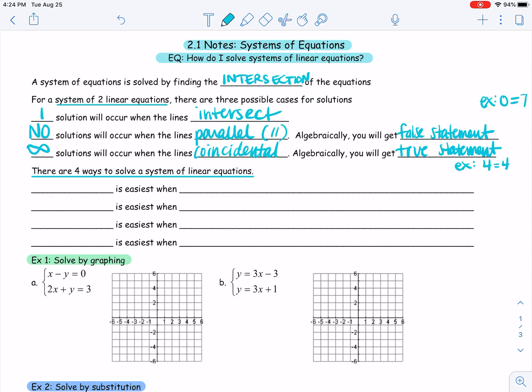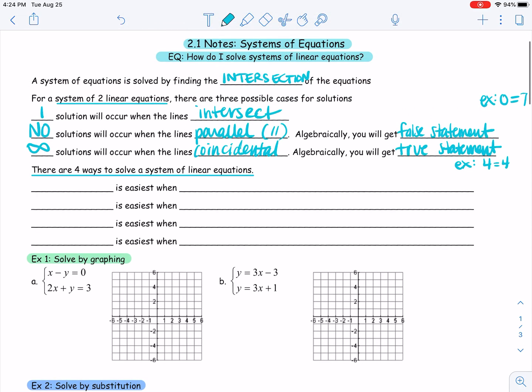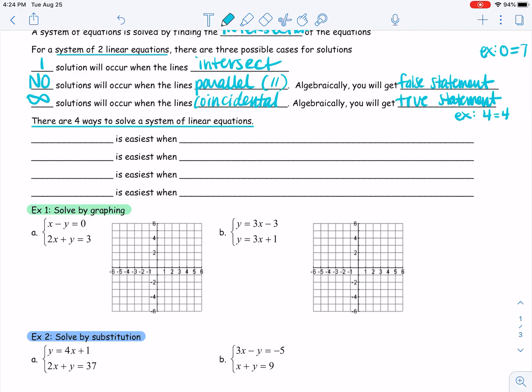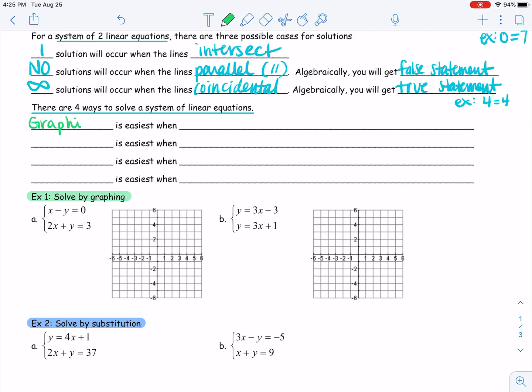So we're going to be working with two-by-two systems right now, which means two equations, two variables. Now, what are some ways that we can solve systems of equations? There are four ways to solve systems. First one: graphing. Graphing is going to be the easiest when both of your equations are already solved for y, in that y equals mx plus b format.